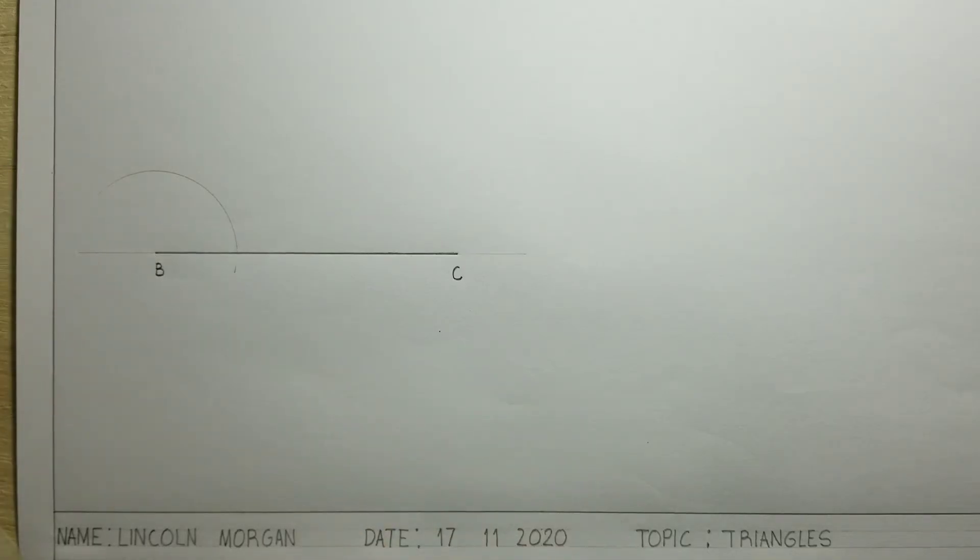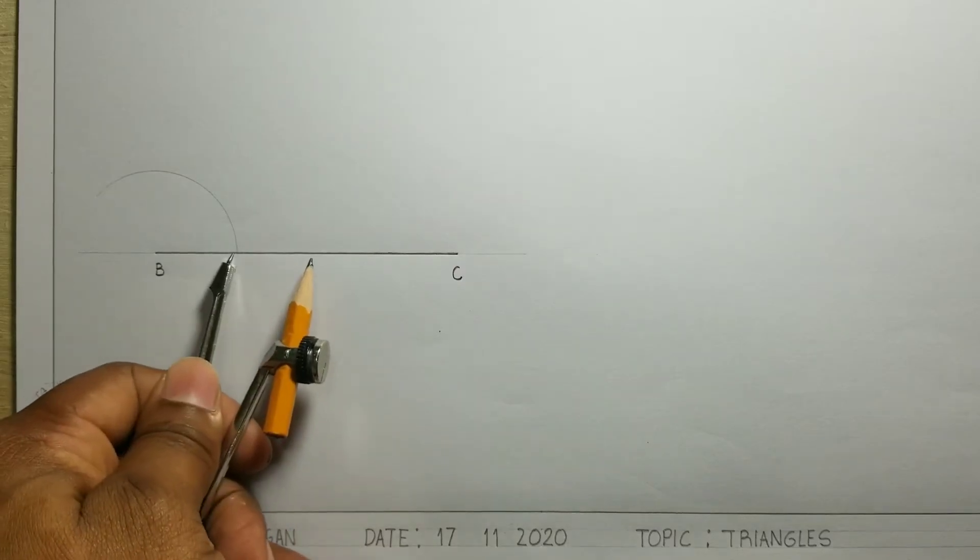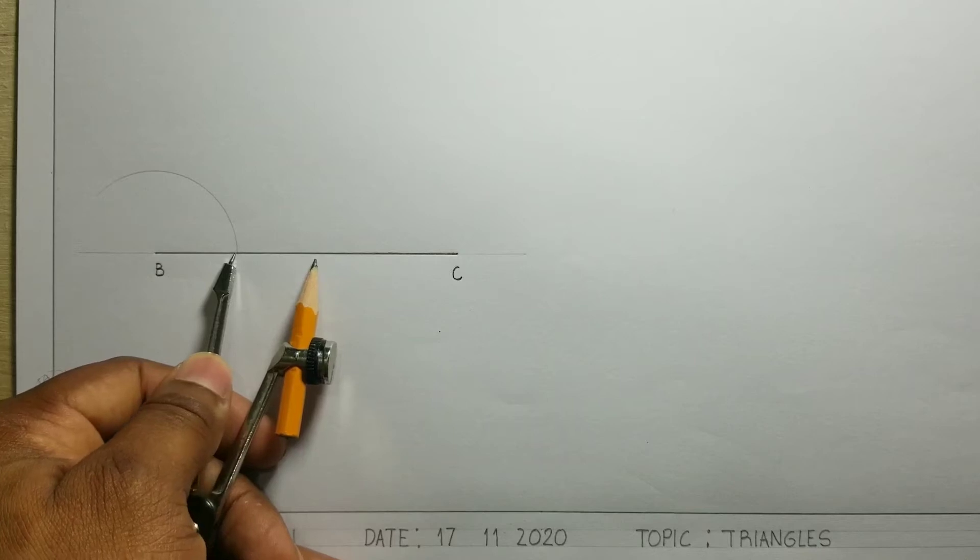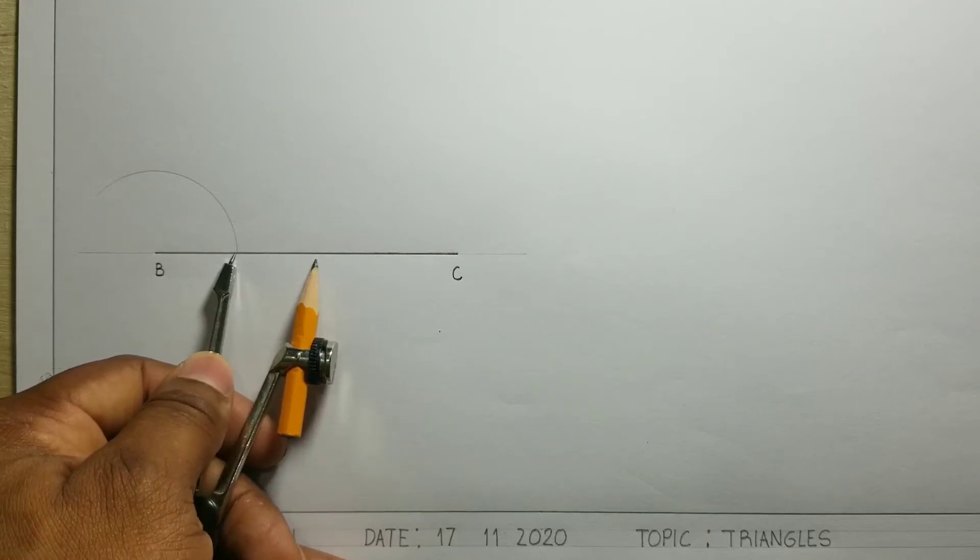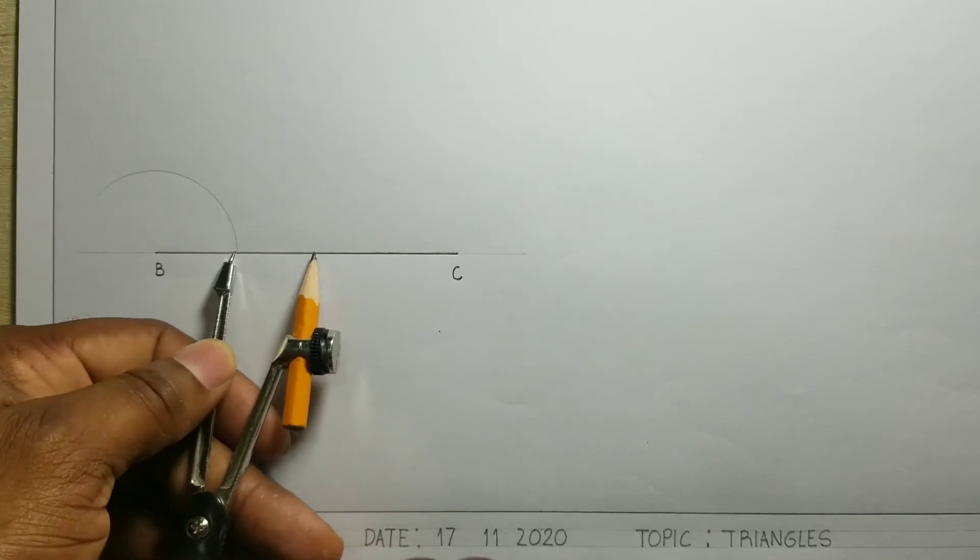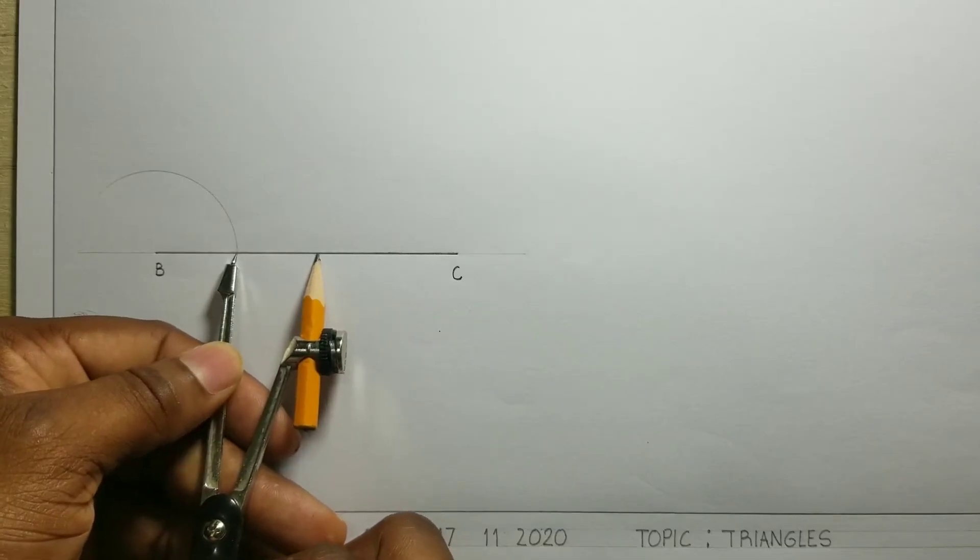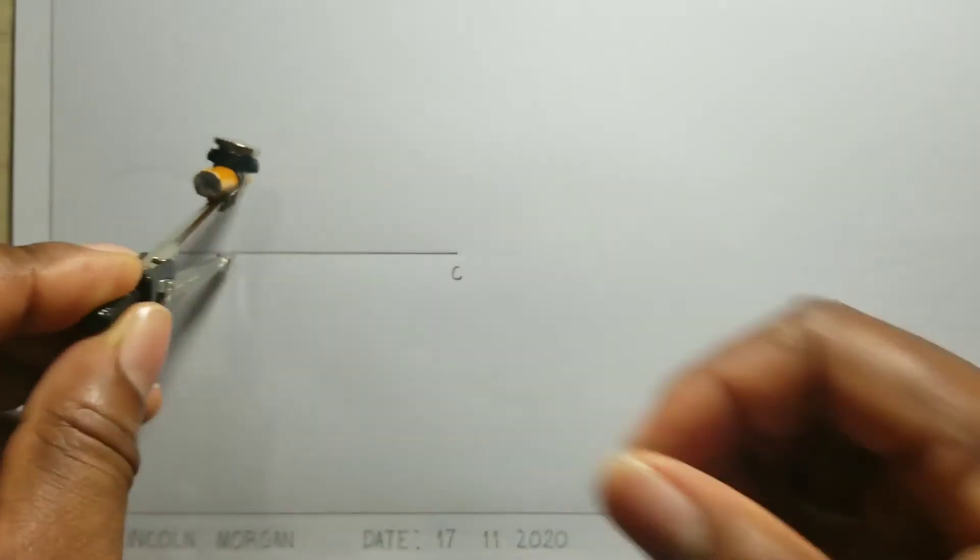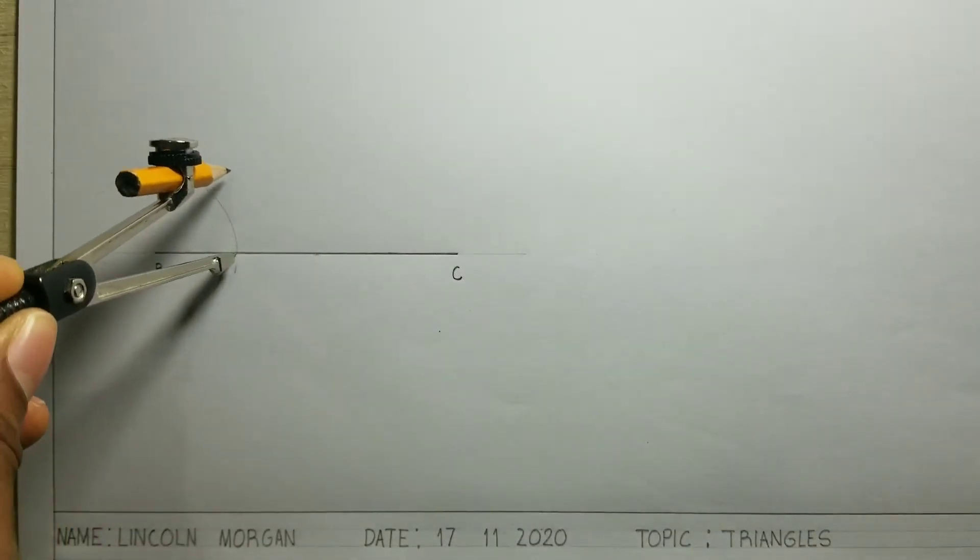We will now use this point as the center of our compass where the arc intersected the line. And with our compass at the same radius, you should not move it.